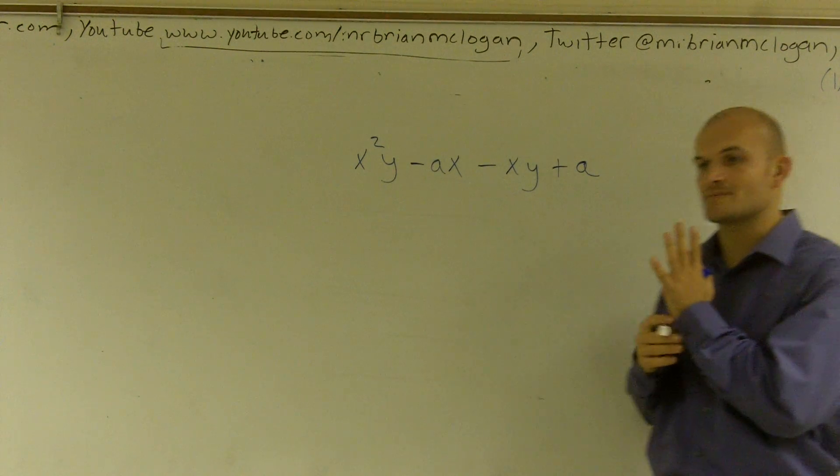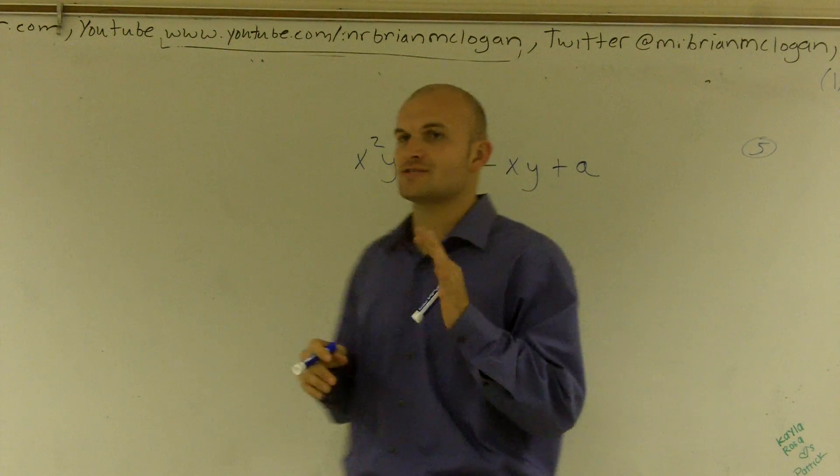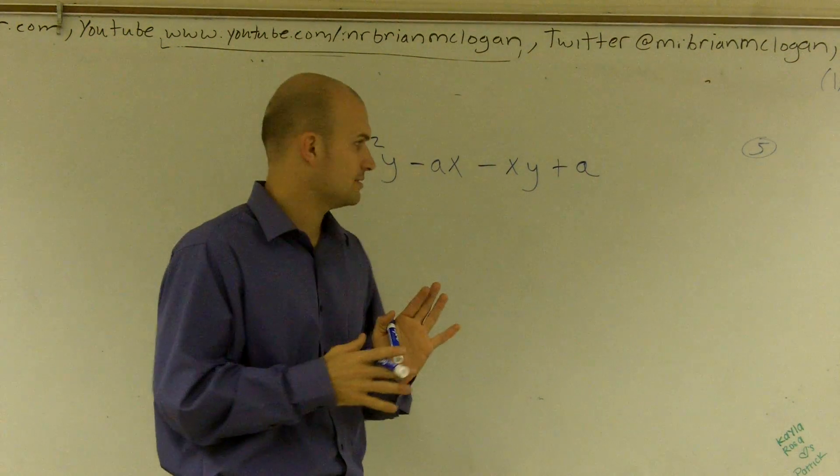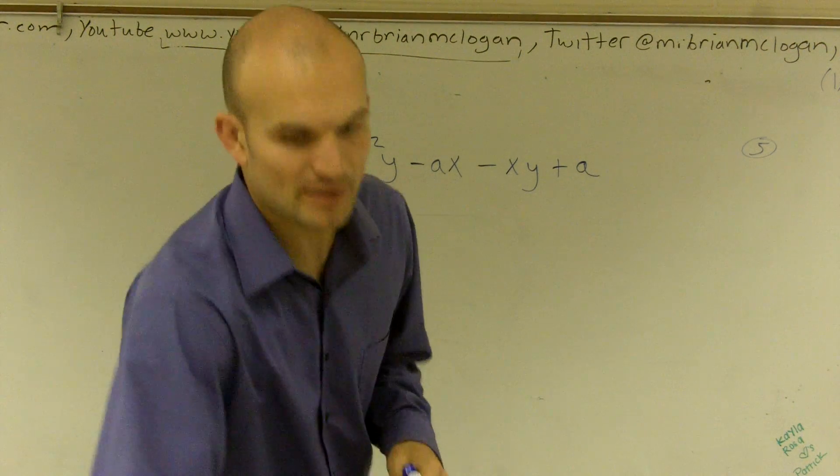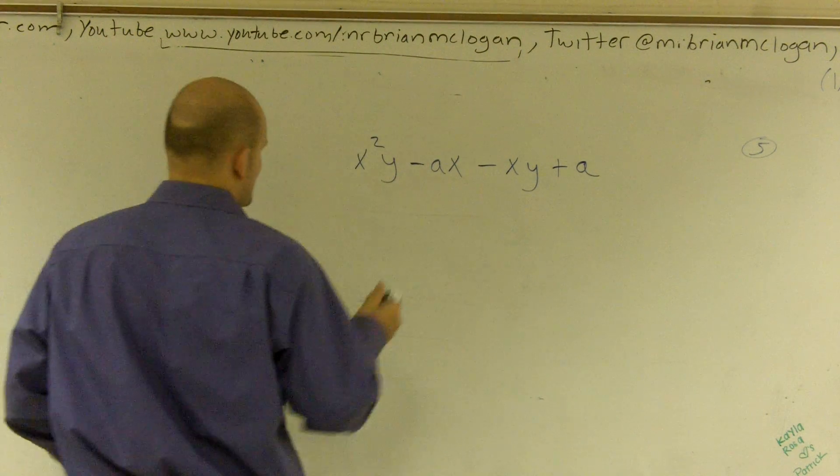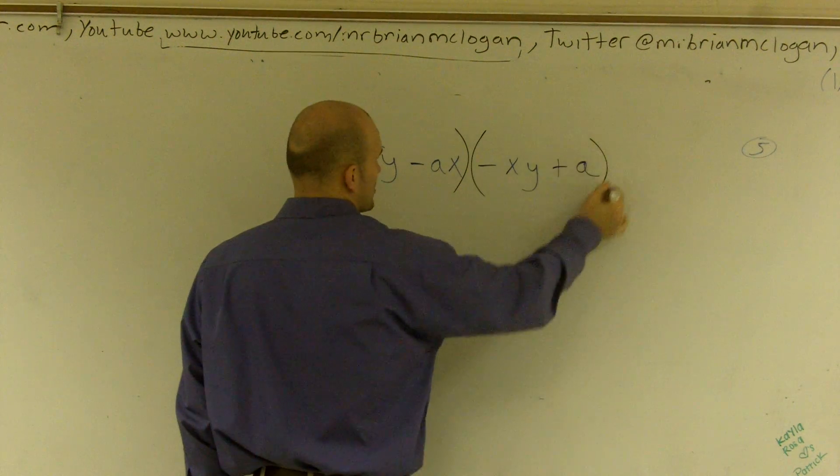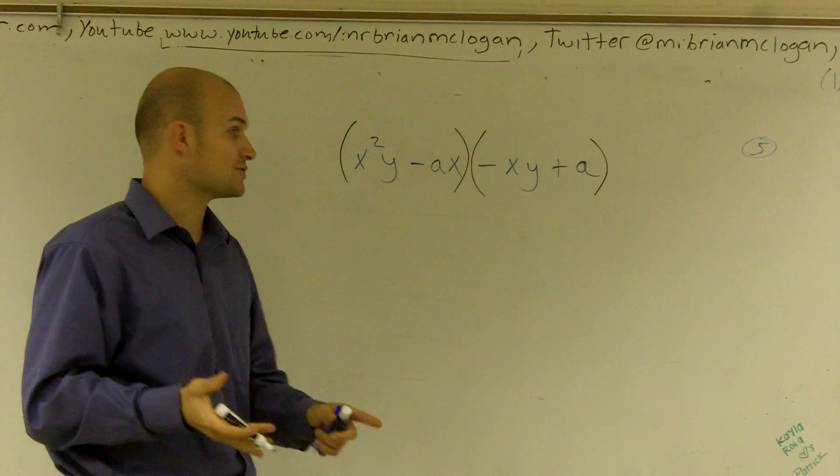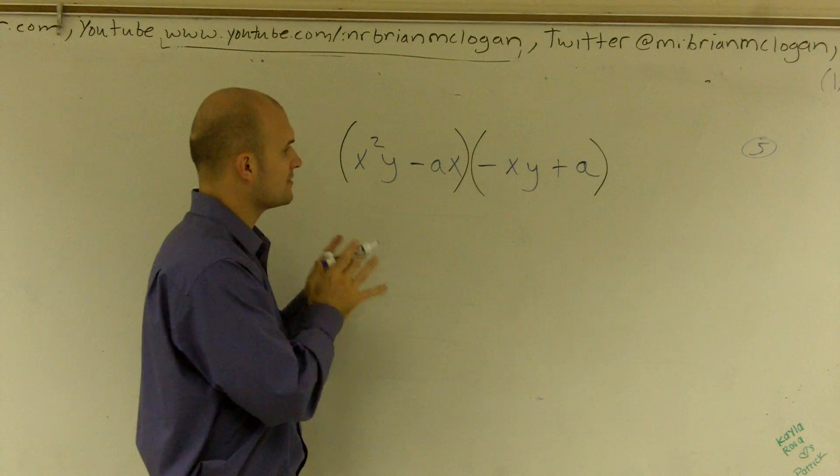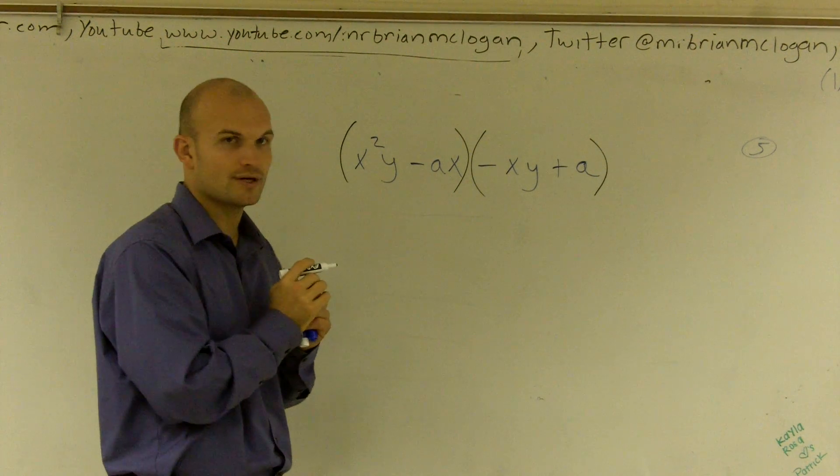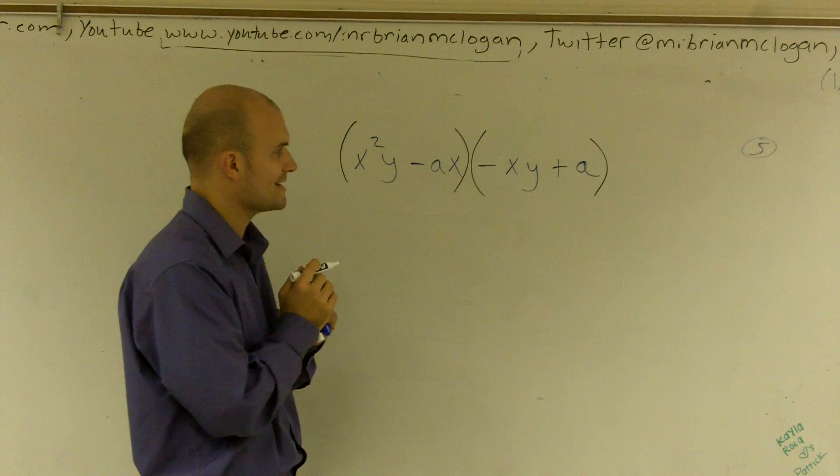But there are four terms, and whenever you see four terms, always try to think of factoring by grouping. What factoring by grouping means is I want you to take your first two terms and your last two terms. Now sometimes you might have to rearrange the terms, but for this problem we're going to be good with just keeping them as the first two and the last two.